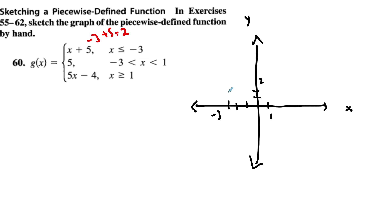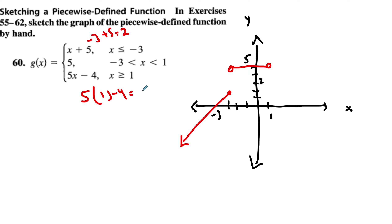From negative 3 to 1, the function equals 5 — a constant horizontal line at y = 5. It does not include the endpoints, so there are open circles at both ends. Then at x = 1 and beyond, the piece is 5x − 4. Plugging in x = 1: 5(1) − 4 = 1, so the graph starts at (1, 1) with a much steeper slope of 5 and continues increasing.